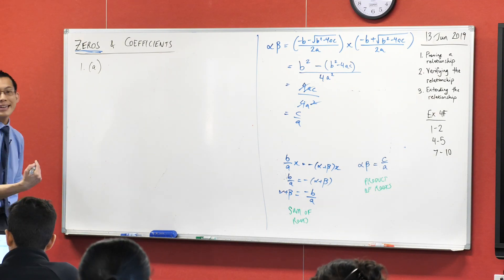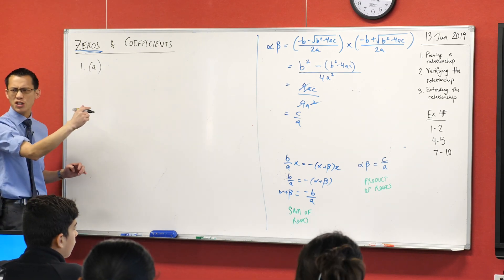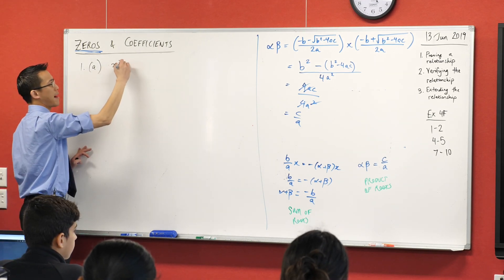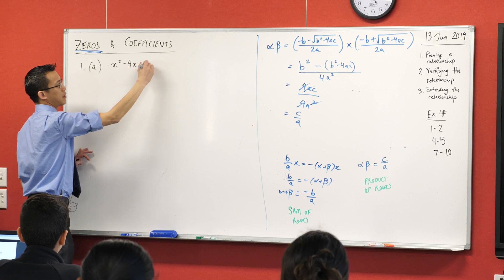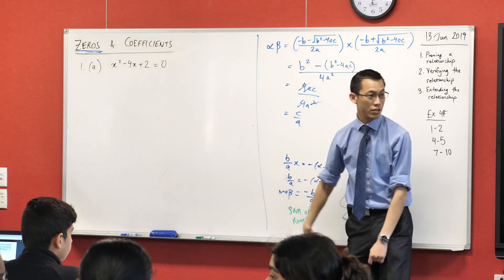They begin by handing you this particular quadratic. Can you read it for me? Because I actually can't see with the reflection. It's x squared minus 4x plus 2 equals 0. Thank you. So here is an equation. It's a quadratic just like before.